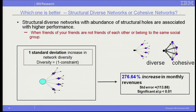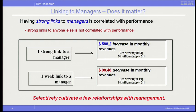Which is better — a diverse network or a cohesive network? We found that the more diverse your network, the more revenue you will generate. If everyone in your network knows each other very well — a cohesive network — that is actually not more successful. More diversity in your network helps you be more successful. We didn't know the answer before we did the study, because both situations seemed plausible. We also found that linkage to your manager matters: a very strong tie with your manager can help you earn $500 more in monthly revenue.